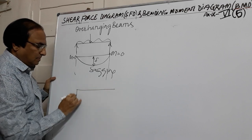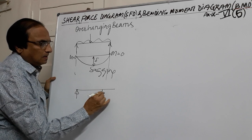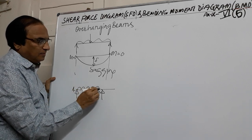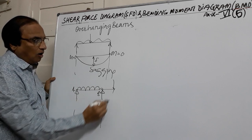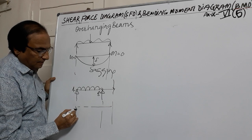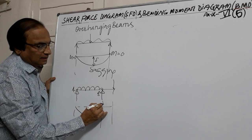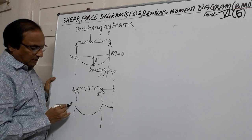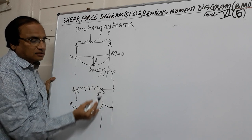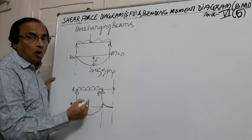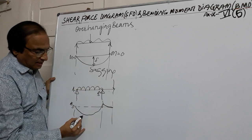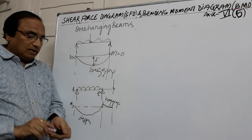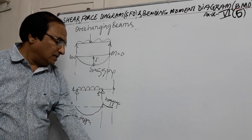Suppose if I take an overhanging beam — these two are the supports and this part is the overhanging part. If I subject this to any form of loading, then from here to here this will be sagging, some part will be hogging, and this will remain straight. At the simply supported end, moment is zero, but at the overhanging support, moment is not zero — it will be a hogging moment. Hogging moment is negative bending moment; sagging moment we take as positive, hogging we take as negative.